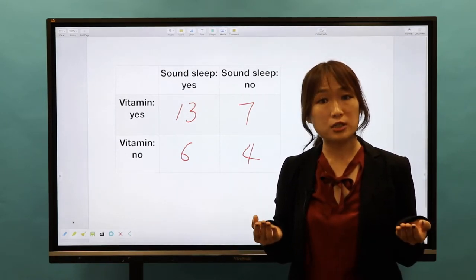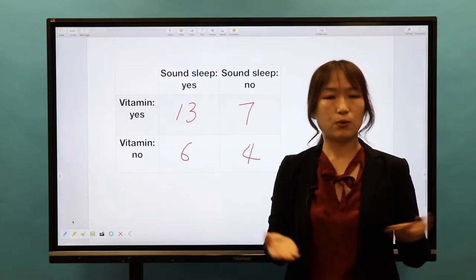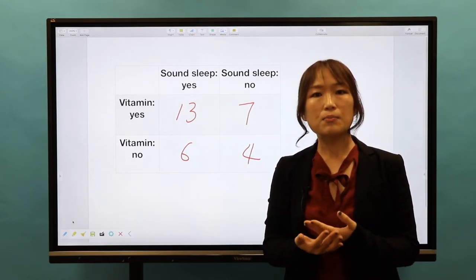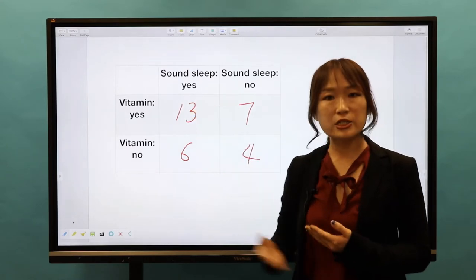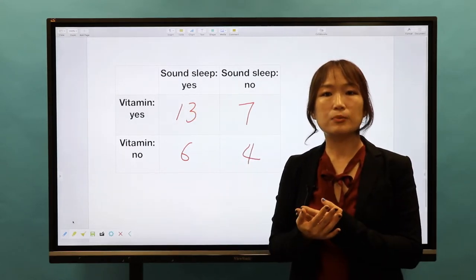The word contingent is very similar to dependent or conditional. So the number of counts in each cell in a contingency table represents...